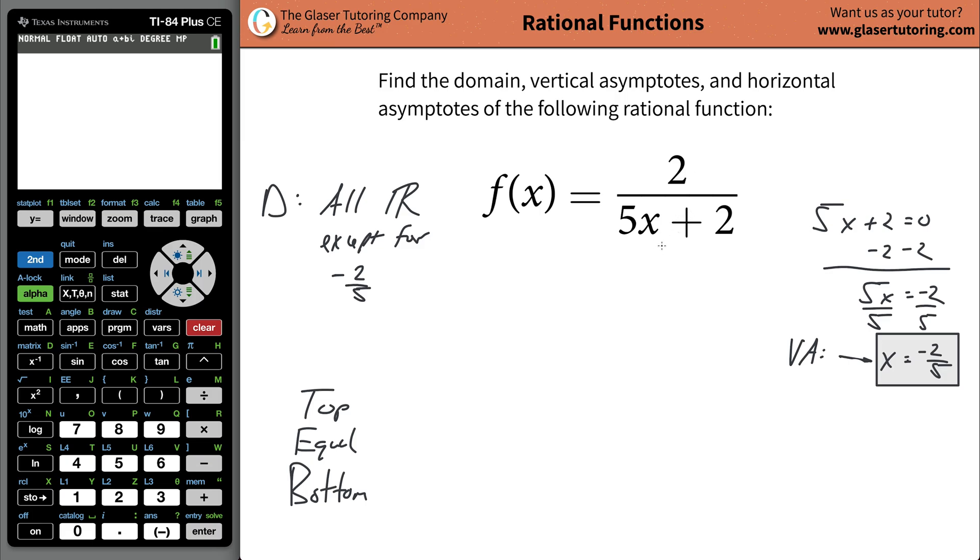So we have a bottom heavy function. Now, bottom heavy functions are relatively easy. You can kind of memorize this. The horizontal asymptote will always be y equaling zero. In other words, what you need to do is you need to take the limit. Oh boy, the limit, right? But it's easy, watch.